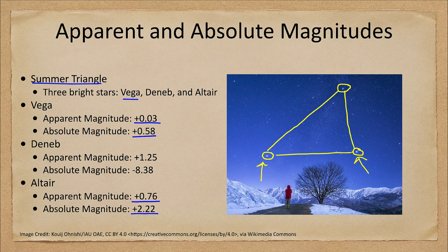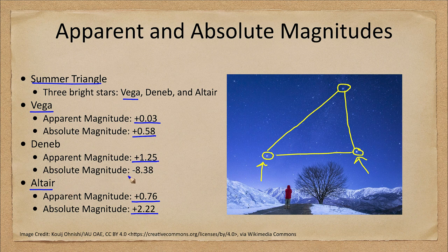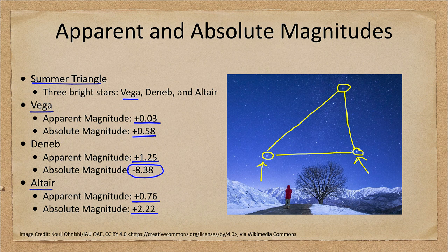Deneb has an apparent magnitude of +1.25, making it the faintest of the three stars in the Summer Triangle. However, its absolute magnitude is −8.38, meaning Deneb appears far fainter than it would if placed at 10 parsecs — so it must be much further away. If Deneb were at the distance of Vega or Altair, it would easily be the brightest star in the sky.